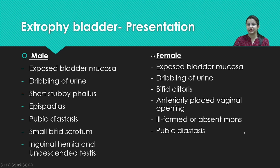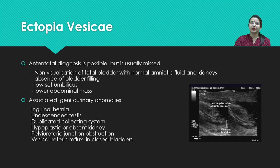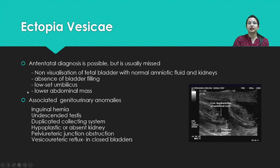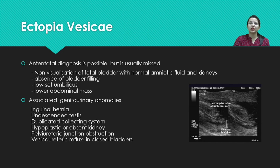Female patients with bladder exstrophy have exposed bladder mucosa with dribbling of urine, bifid clitoris, anteriorly placed vaginal opening, poorly formed labia, and pubic diastasis. Ectopic vesica can be diagnosed antenatally but is usually missed. To identify it, one should look for non-visualization of the fetal bladder — especially when amniotic fluid and kidneys are normal — and check for bladder filling, a low-set umbilicus, or any lower abdominal mass. Associated anomalies include inguinal hernia, undescended testis, renal anomalies, and vesicoureteric reflux.